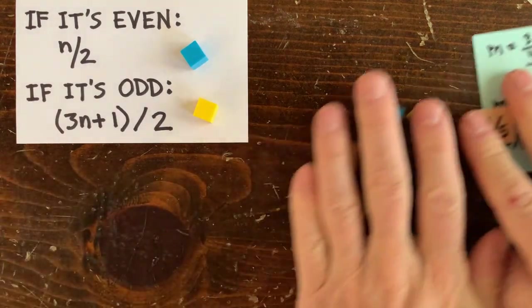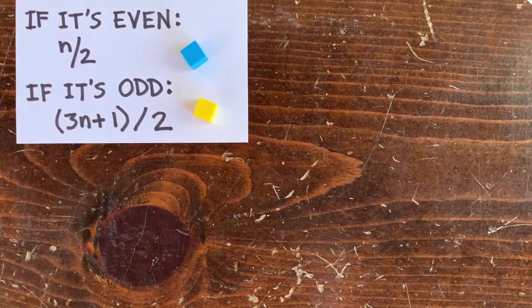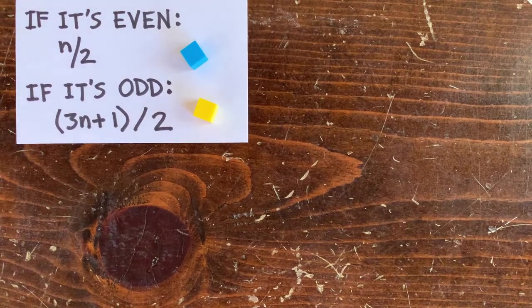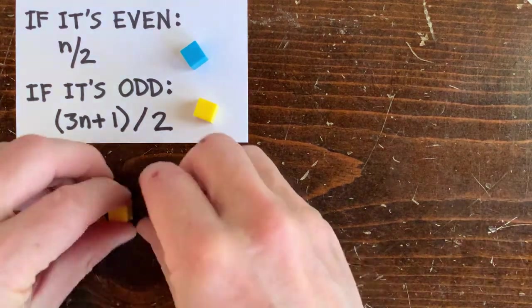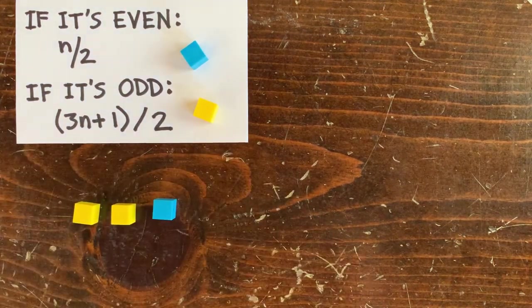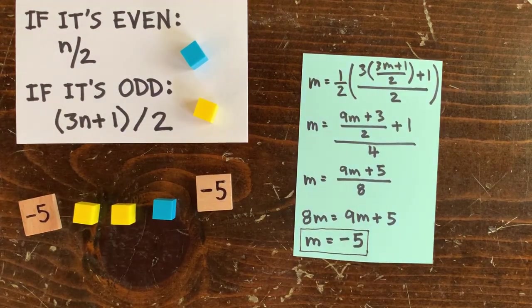In fact, for almost any operation sequence we choose, our loop is going to come out with fractions. So let's change the operation sequence to 3n plus 1 over 2, 3n plus 1 over 2, and then a half. Solving for m this time, we get negative 5. Well, negative numbers are also yuck.